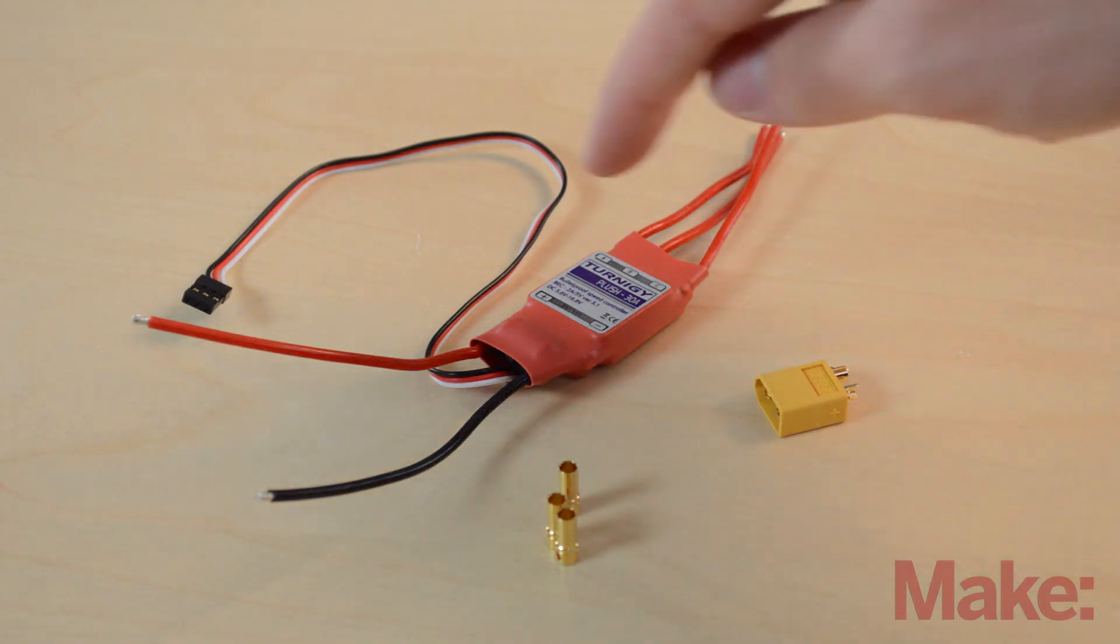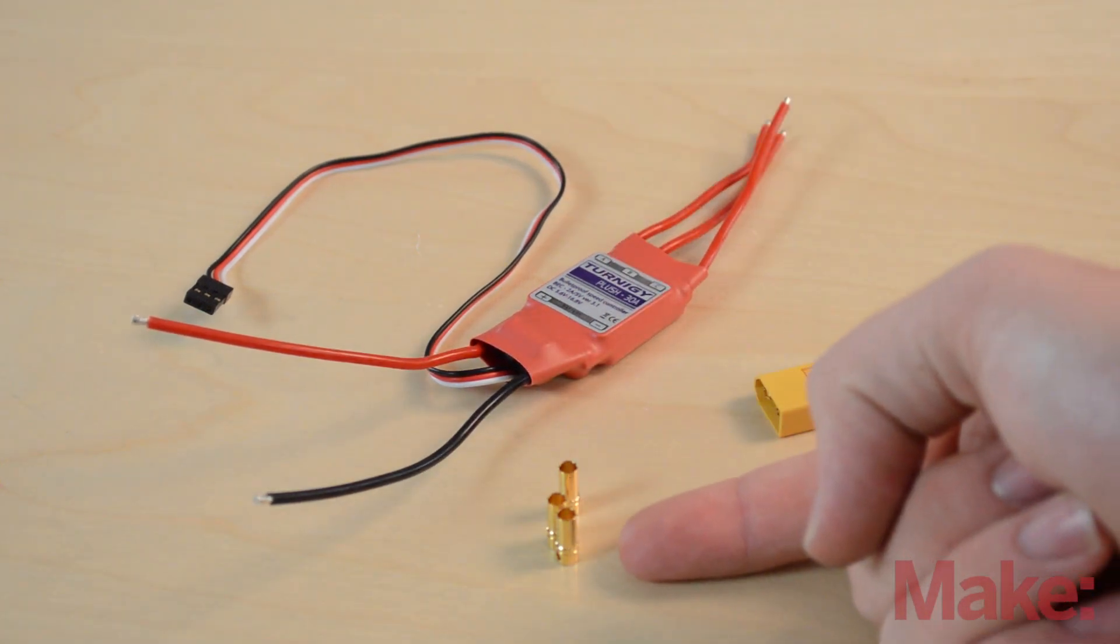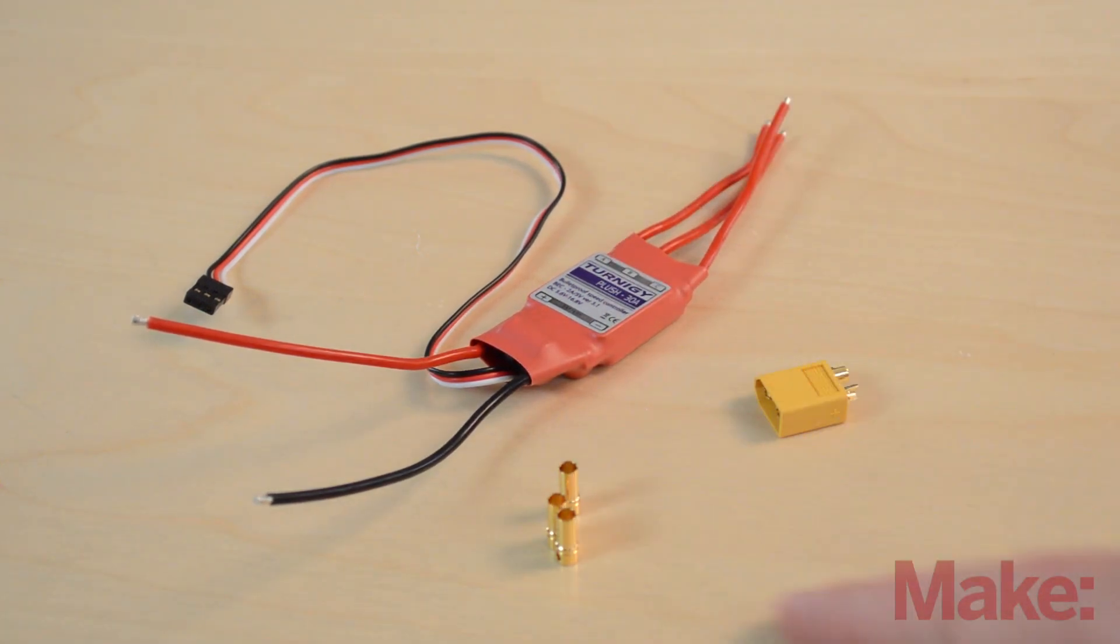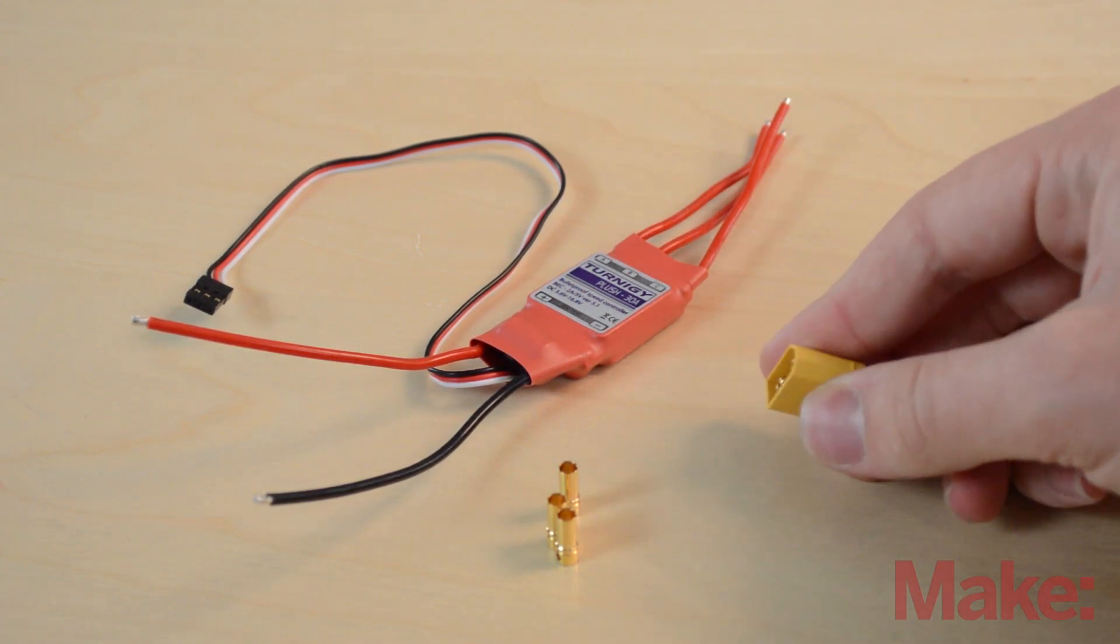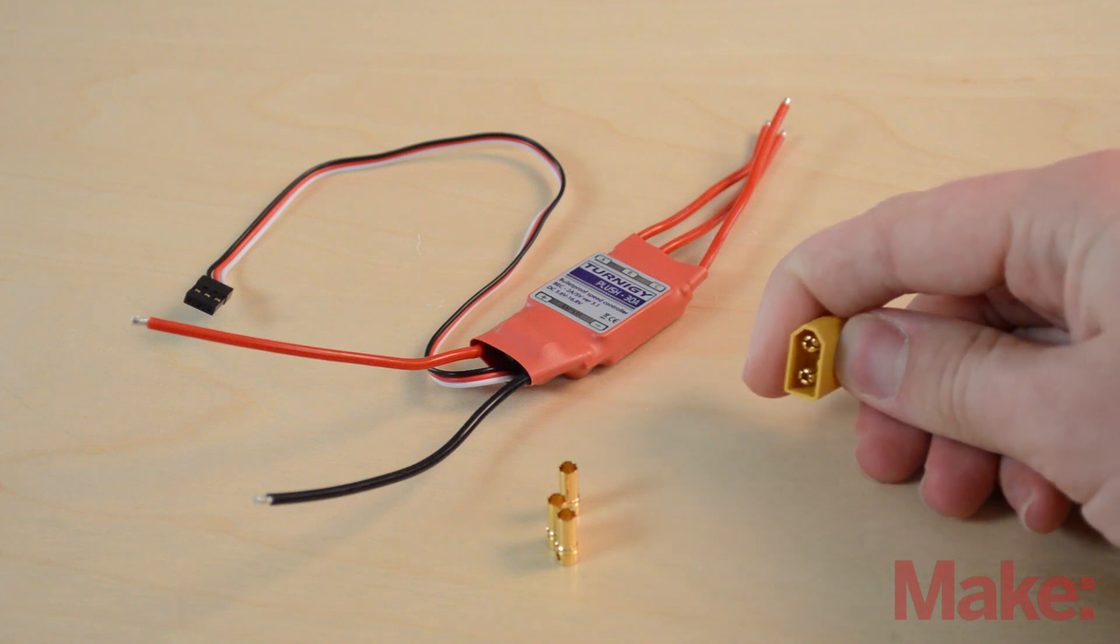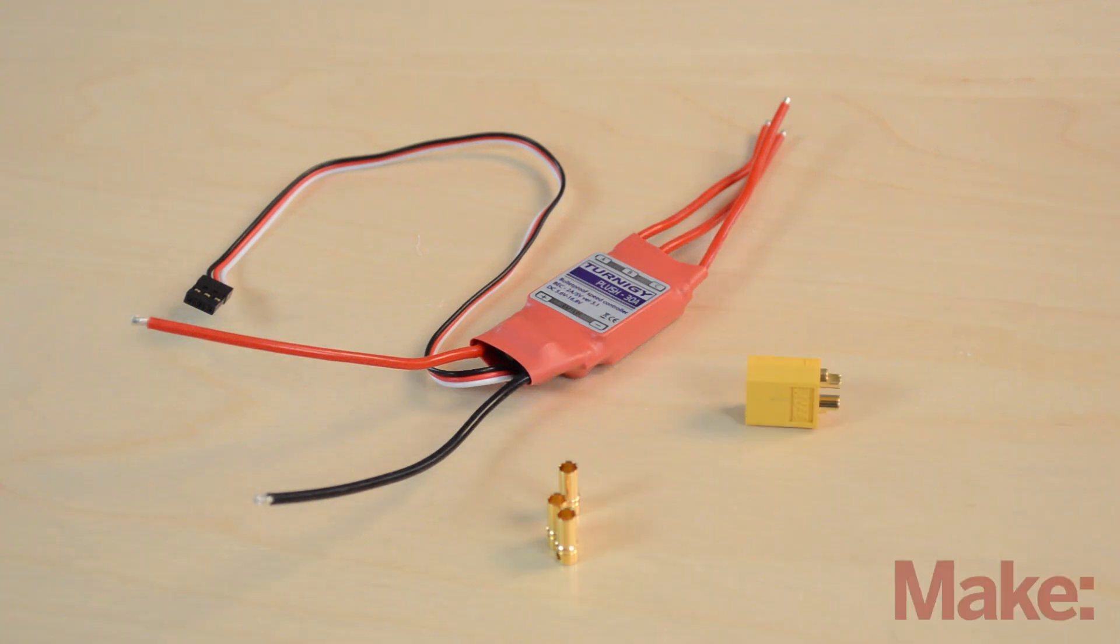For the parts you're going to need your ESC, the three female bullet connectors as well as the male XT60 plug. Now this is the one with the prongs on the inside. This is the male. The one that goes on the battery is the female. One tip that you can learn is that if something is giving power it gets a female connector and if something is taking power from something else it gets a male connector.